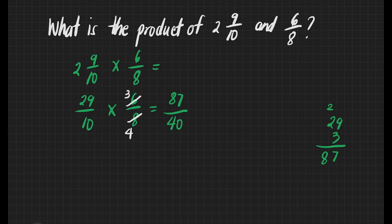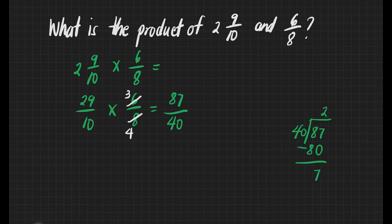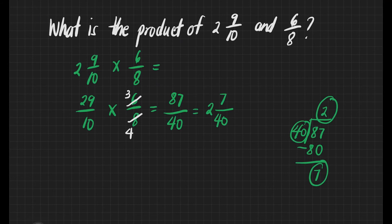But this is not yet the final answer because we still need to change it to a mixed number. 87 over 40 is an improper fraction, so we need to change it to a mixed number. We will divide the numerator by its denominator. 87 divided by 40: how many 40s are there in 87? That's 2. 2 times 40 is equal to 80. Then subtract: 87 minus 80 is 7. Our 2 is the whole number, our remainder 7 is the numerator, and our divisor 40 is the denominator. So the product of 2 and 9 tenths and 6 eighths is 2 and 7 over 40.